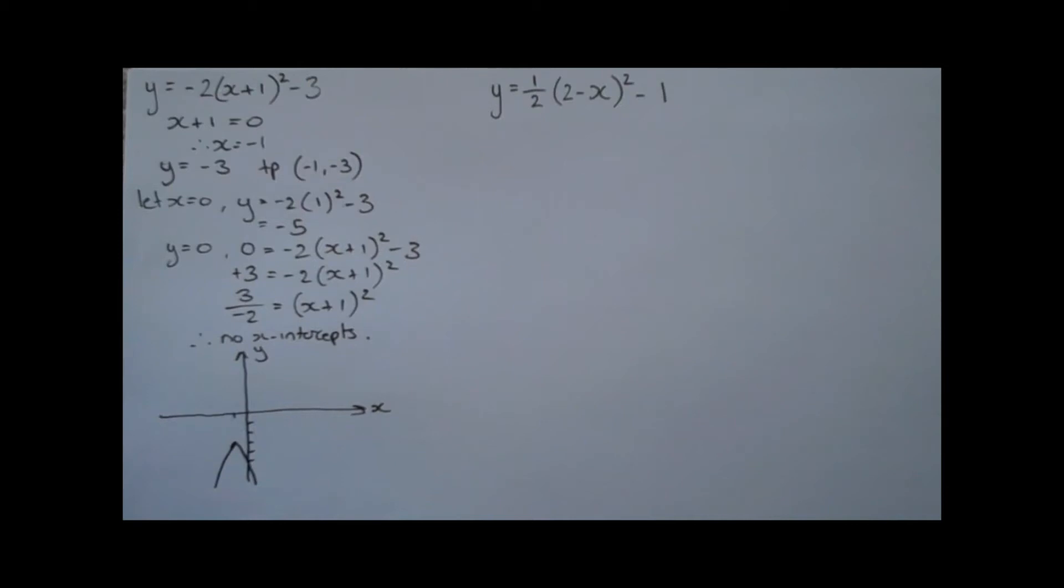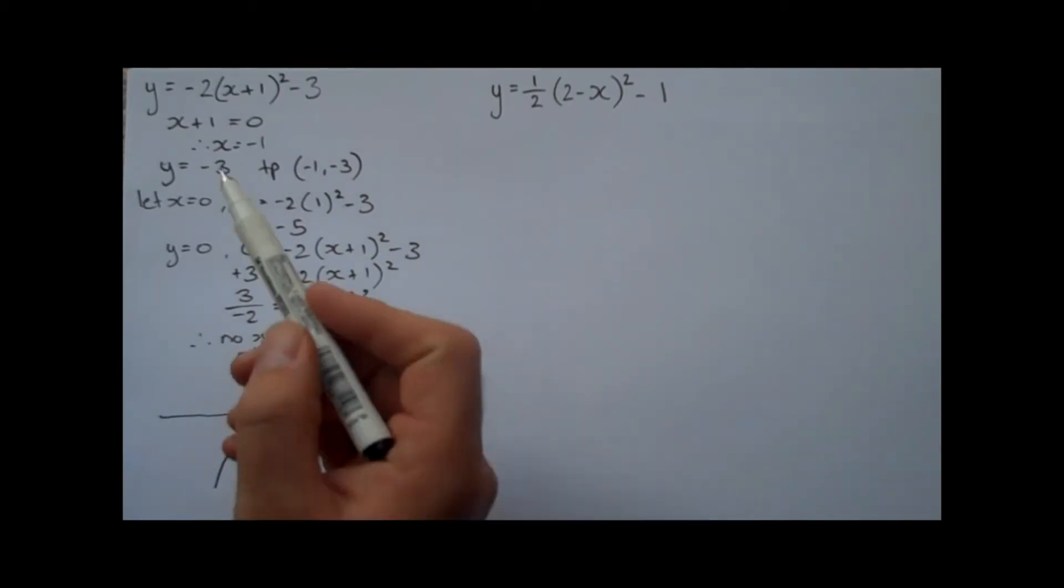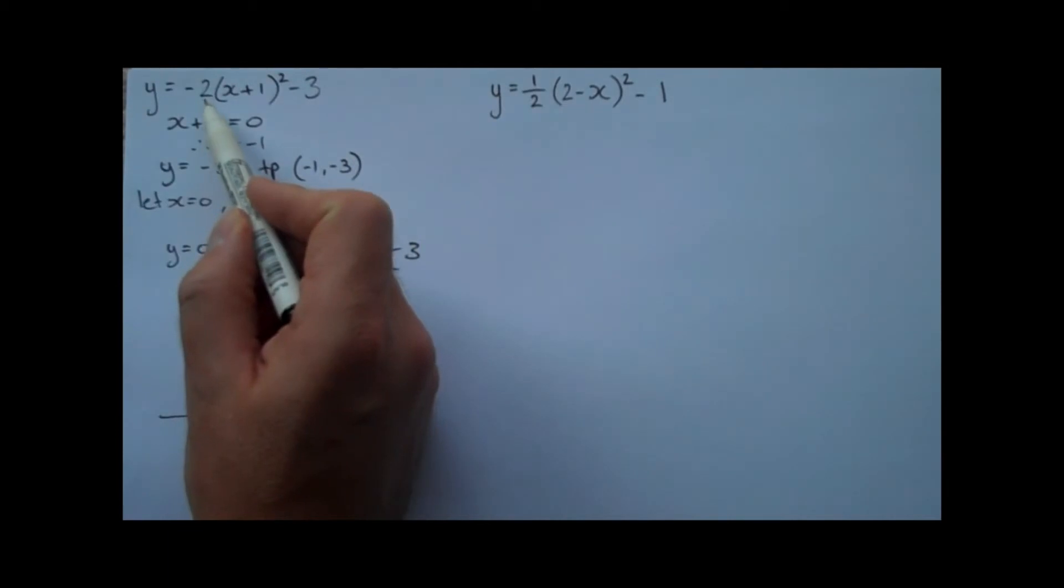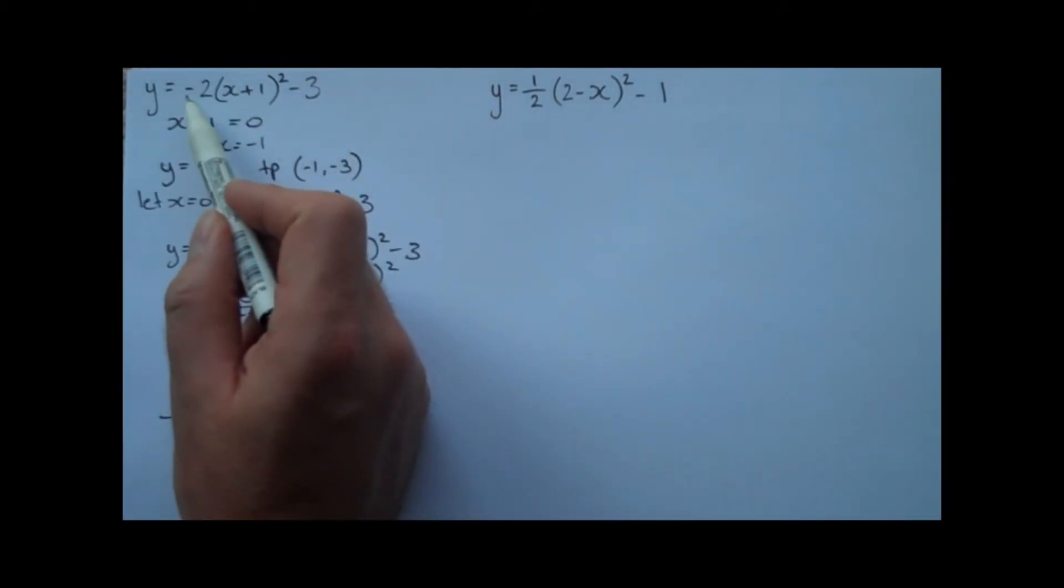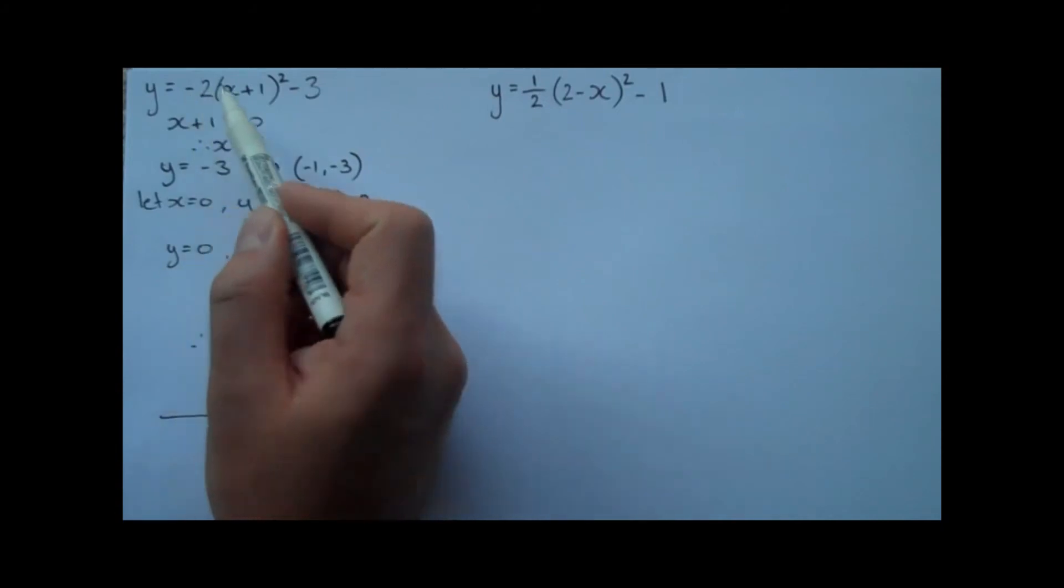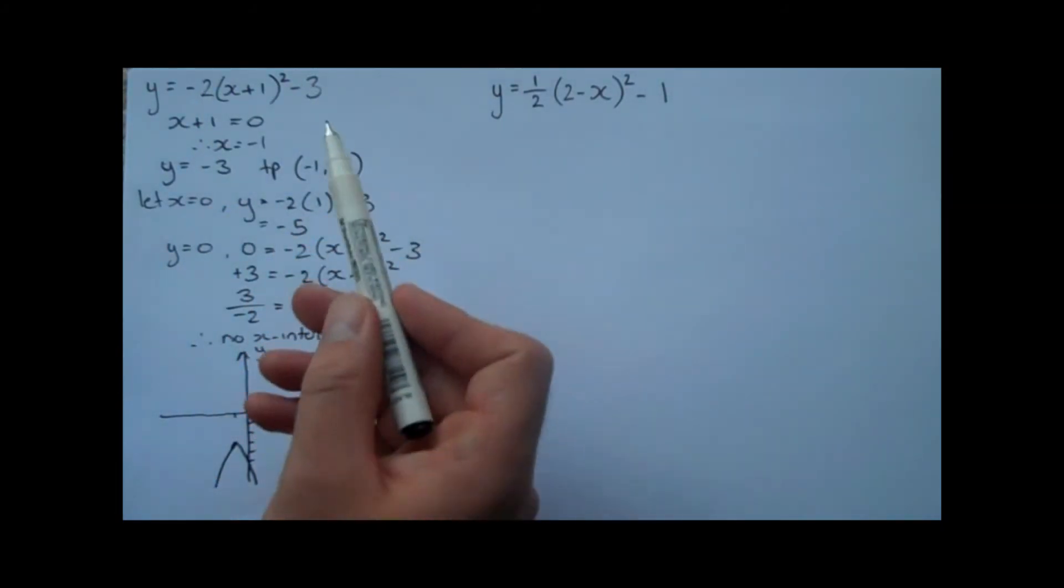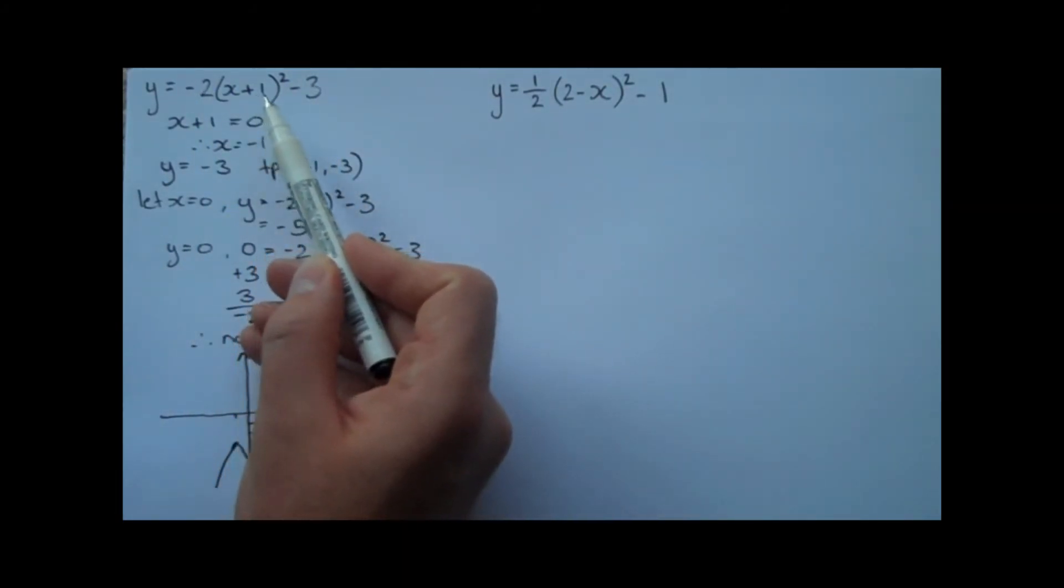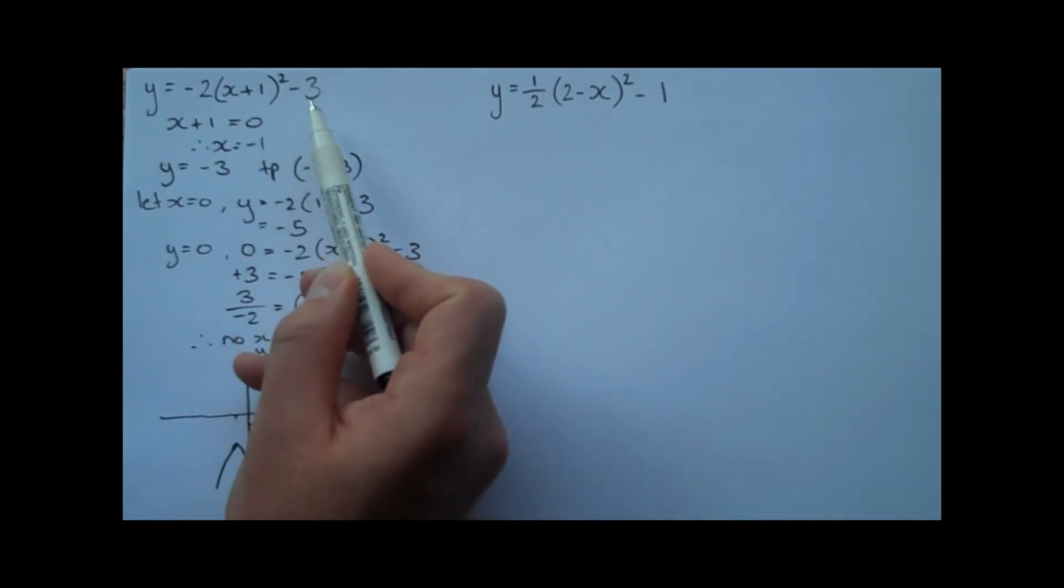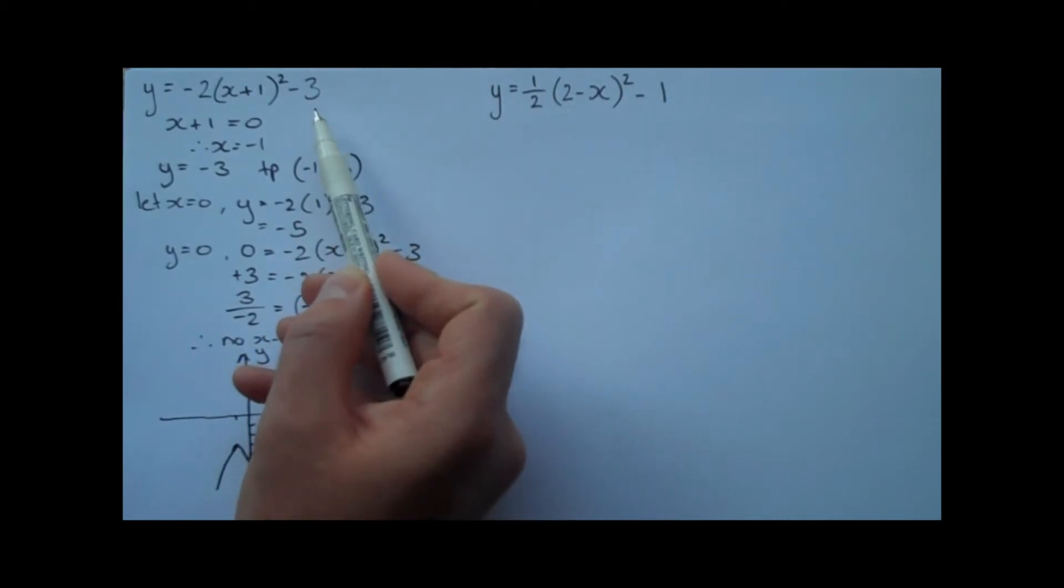So if we started with the basic parabola, x², and we wanted to state the transformations that have taken place, well, we would say that there's been a dilation of two units parallel to the y-axis, or from the x-axis. There's been a reflection in the x-axis. There has been a horizontal translation of one unit to the left, or in the negative x direction. There's been a vertical translation of three units down, or in the negative y direction.